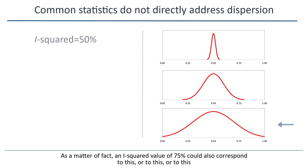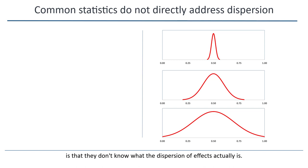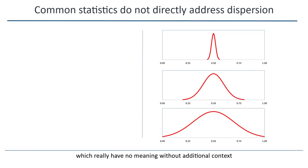As a matter of fact, an I-squared value of 75% could also correspond to this, or to this, or to this. I suspect that the reason researchers offer vague descriptions of heterogeneity is that they don't know what the dispersion of effects actually is. Since we don't actually know how much the effect size varies, we resort to vague phrases like a moderate amount of heterogeneity or a lot of heterogeneity, which really have no meaning without additional context. And then we focus on the mean, which is something that we do understand.